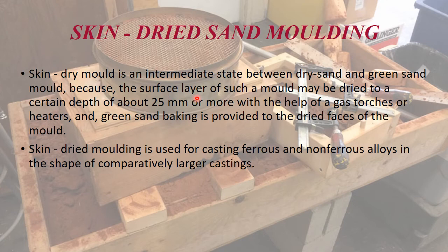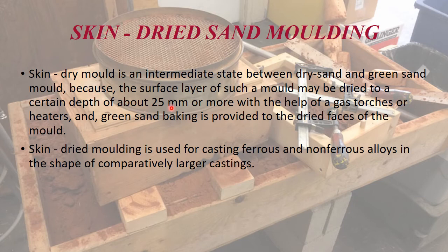The surface layer of the mold is dried to a depth of 25 mm or more with the help of gas torches or heaters. Sands used for making skin dried molds contain certain binders like linseed oil, which hardens when heated. Once the sand is heated, the binders cause it to harden.